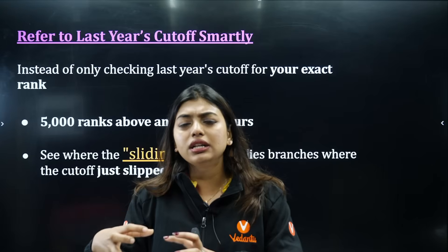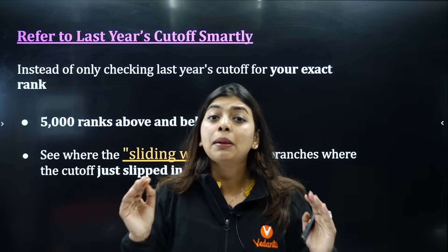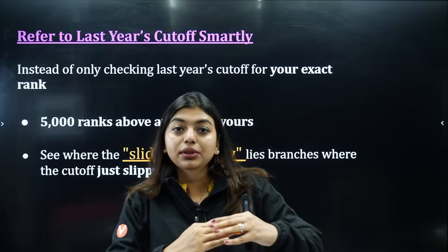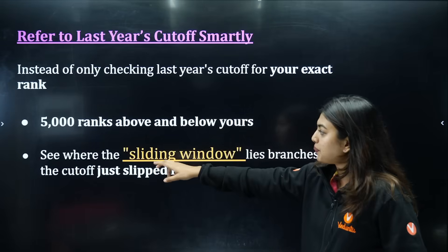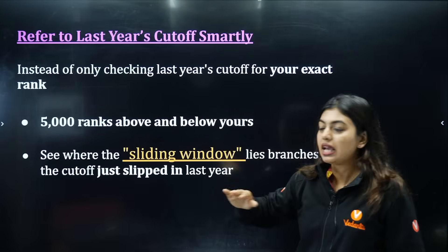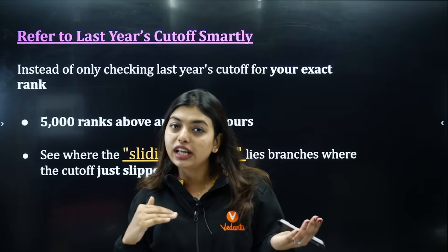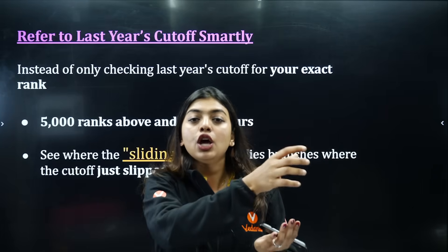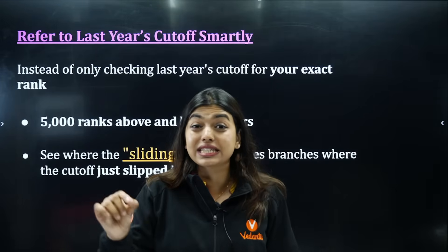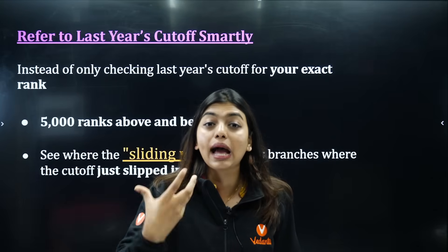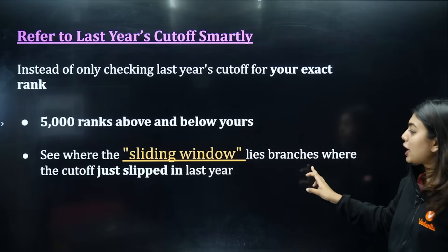Instead of only checking last year's cutoff at your exact rank — let's say your rank is 35,000 — do something called sliding and stretching: go 5,000 ranks above and below. Check from 30,000 to 40,000 in the choice filling so that whichever comes within that range you will be able to secure, and since you selected the college you will be happy to settle there.